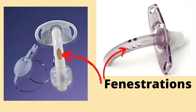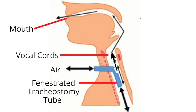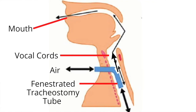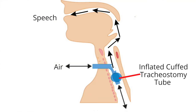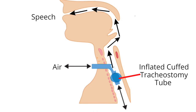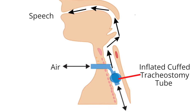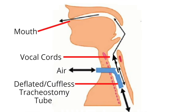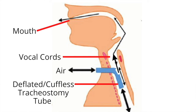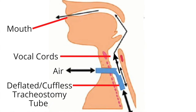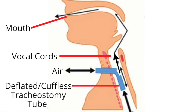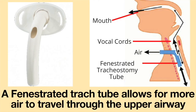A fenestrated tracheostomy tube has a small hole or multiple holes in the shaft, allowing for increased airflow up the airway and out the nose and mouth. This is especially helpful when a person wants to speak. When the cuff is inflated, fenestrations can allow some air to pass through the tube and up the airway to allow for speech. When the cuff is deflated or a cuffless tube is used, airflow is redirected around the tube as well as through the fenestrations and passes through the upper airway, allowing more air to flow up than with non-fenestrated tubes.